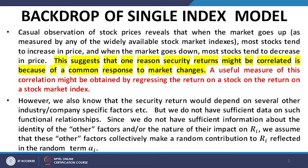What is the backdrop of the single index model? A casual observation of stock prices reveals that when the market goes up — the market being epitomized by a broad-based index like India's Nifty or the BSE Sensex — stock prices tend to go up together with the market indices. Similarly, when the market goes down, most stocks tend to go down in prices. This is the backdrop: there is some relationship between the market indices and the stock prices of individual securities.